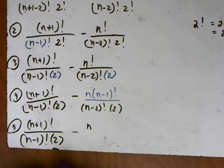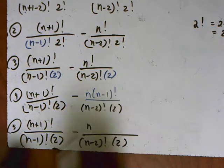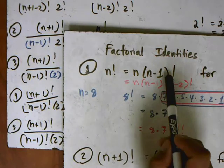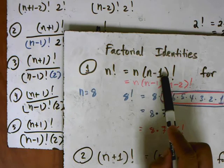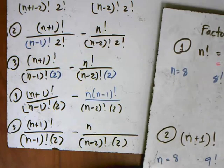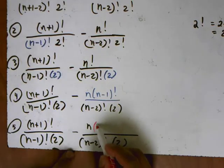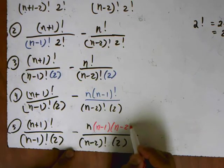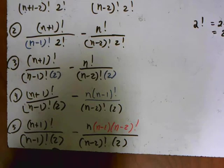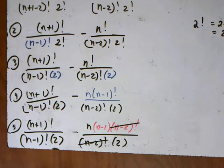I want to do something with n minus 1 factorial. Looking at our identity, n minus 1 factorial is really just n minus 1 times n minus 2 factorial. So I can make that change. At this point, we see that something in here can cancel and eliminate the parts that have factorials.